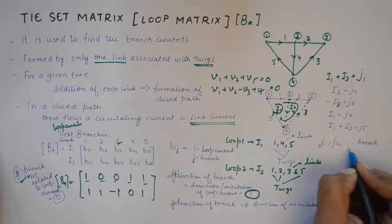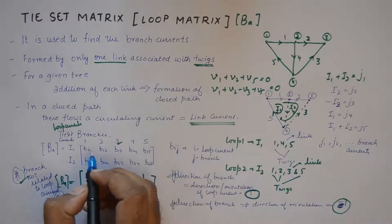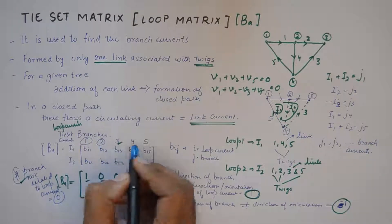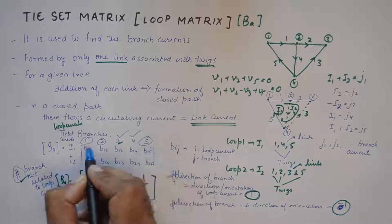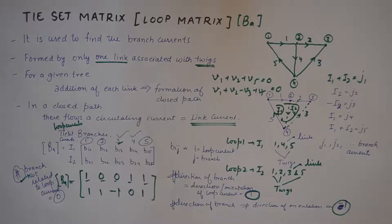This matrix can also be partitioned into two sub-matrices of twigs and links, separating the twigs and links. Branches 1, 2, and 5 are twigs and 3 and 4 are links, so separating 1, 2, and 5 on the left-hand side and 3 and 4 on the right will give us the twig and link sub-matrices, as discussed in the previous video. That is how you generate a tie set matrix, or loop matrix, from a tree. If you liked the video, give it a thumbs up, consider subscribing to the channel, and I'll see you in the next video.